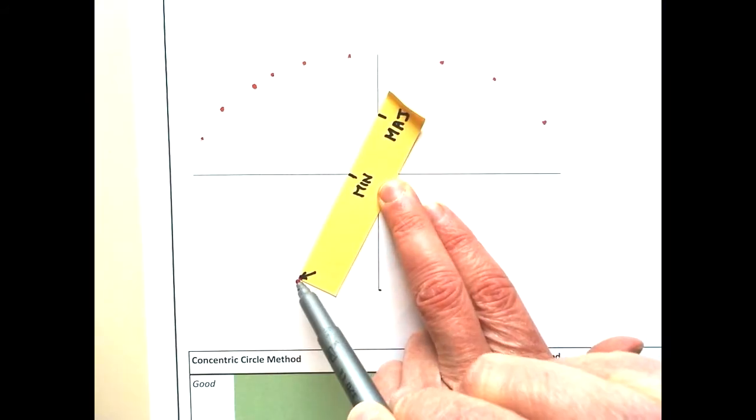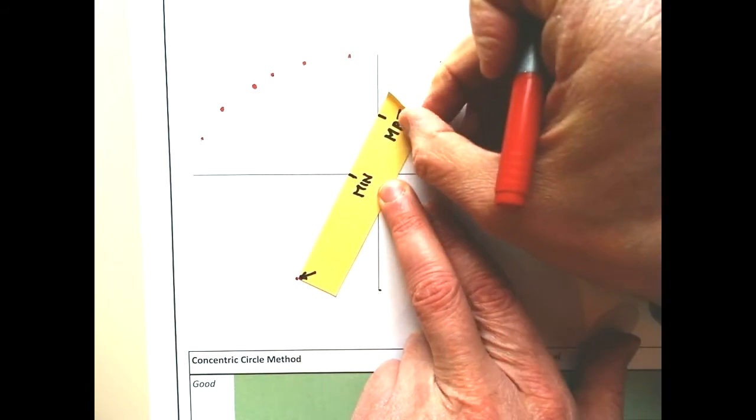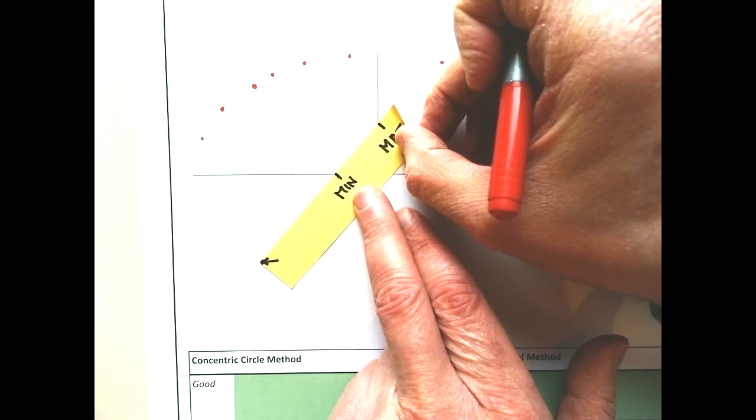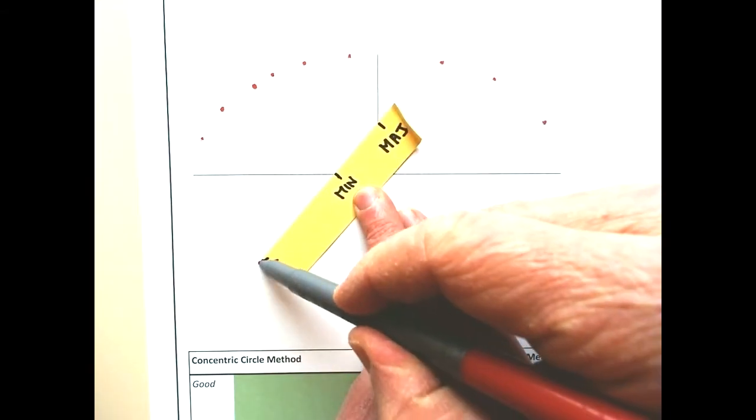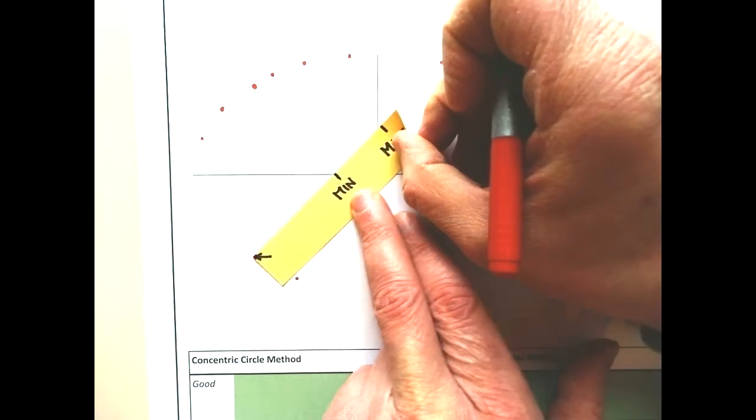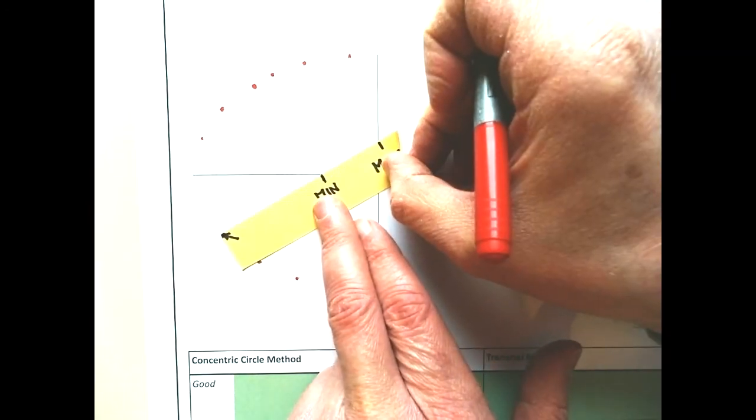To draw the bottom half of your ellipse, again, make sure you line up the minor point and the major point on the major and minor axis. Draw your dots.